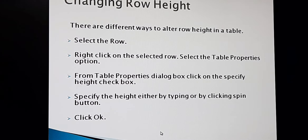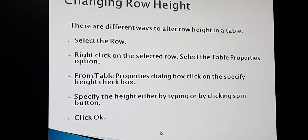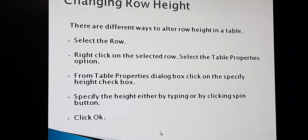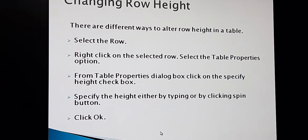Whichever row's height you would like to change, you have to select that row first. Then in the same row, do a right click. Whenever we do a right click, a pop-up menu will come, and from the pop-up menu we will have to select Table Properties. After selecting Table Properties, a dialog box will come on your screen. I will later show you that particular dialog box.